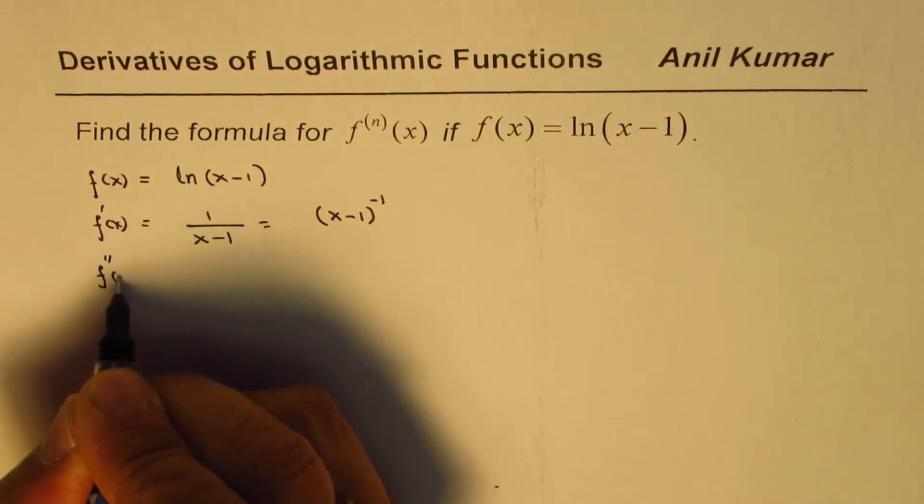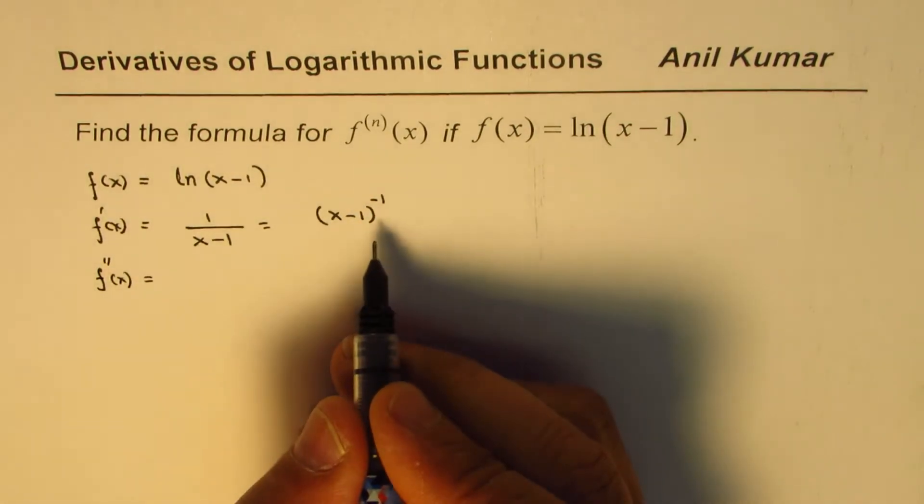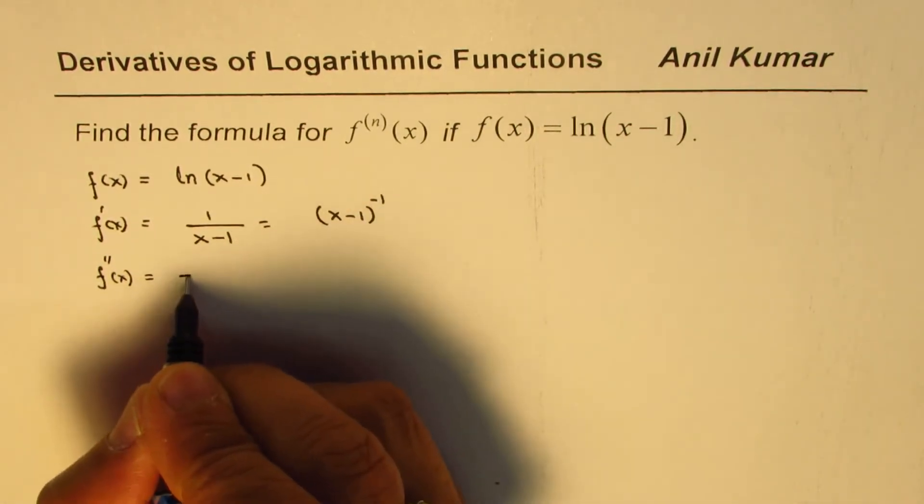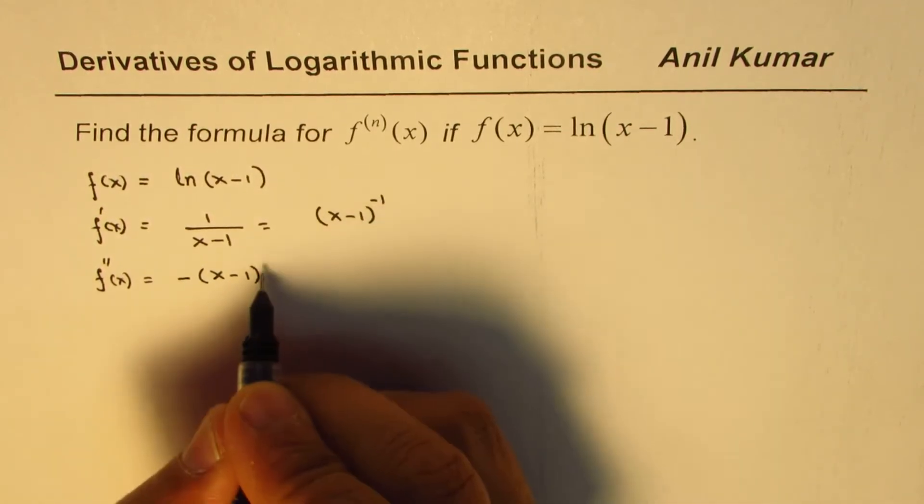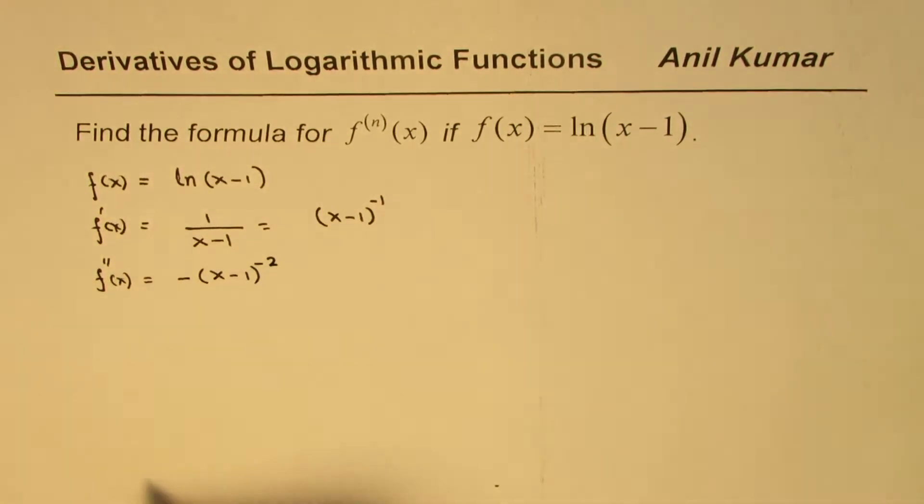The second derivative of this function is, we can apply the power rule, so we get -(x-1)^(-2).